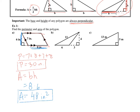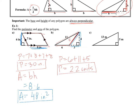For the next one, the perimeter is 6 plus 11 plus the missing side length. That's a 3-4-5 triangle, so we can apply our Pythagorean triples — or use the Pythagorean theorem — giving us 22 units for the perimeter. For area, we have half of the base, which is 6, times the height, which is 4: that's 3 times 4, so the area is 12 units squared.